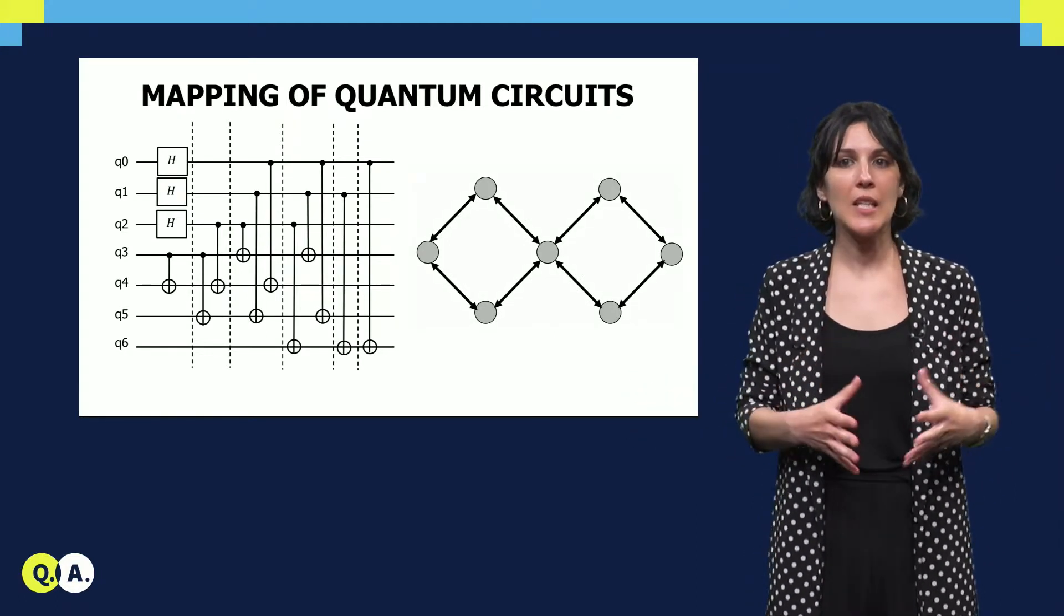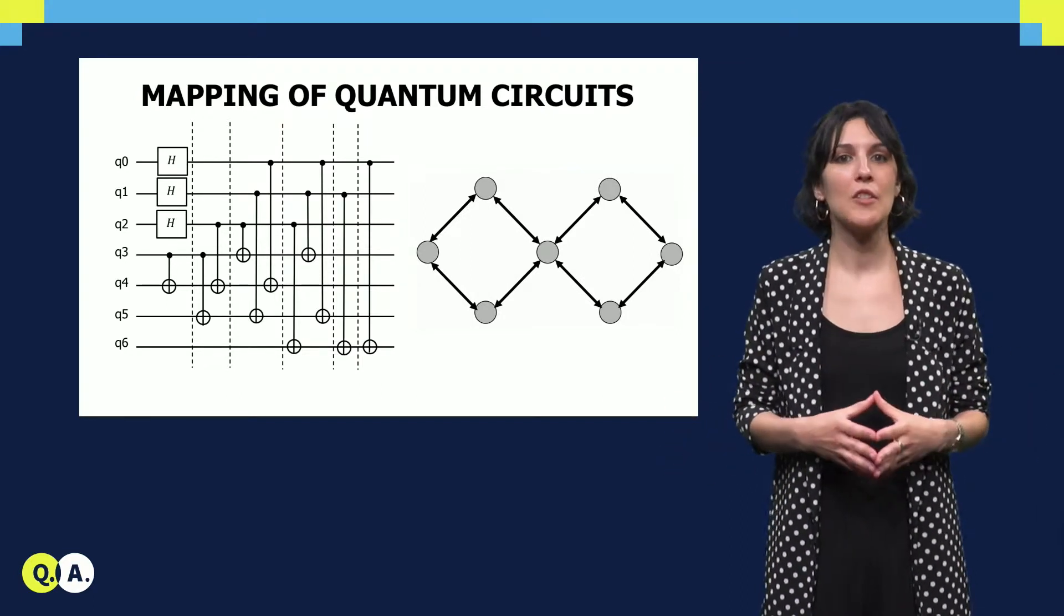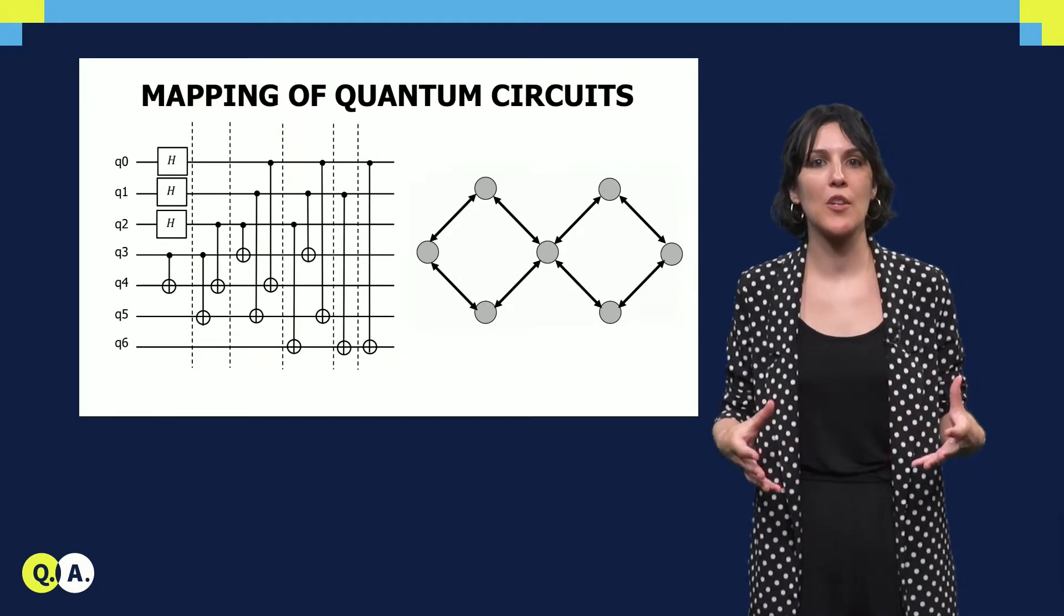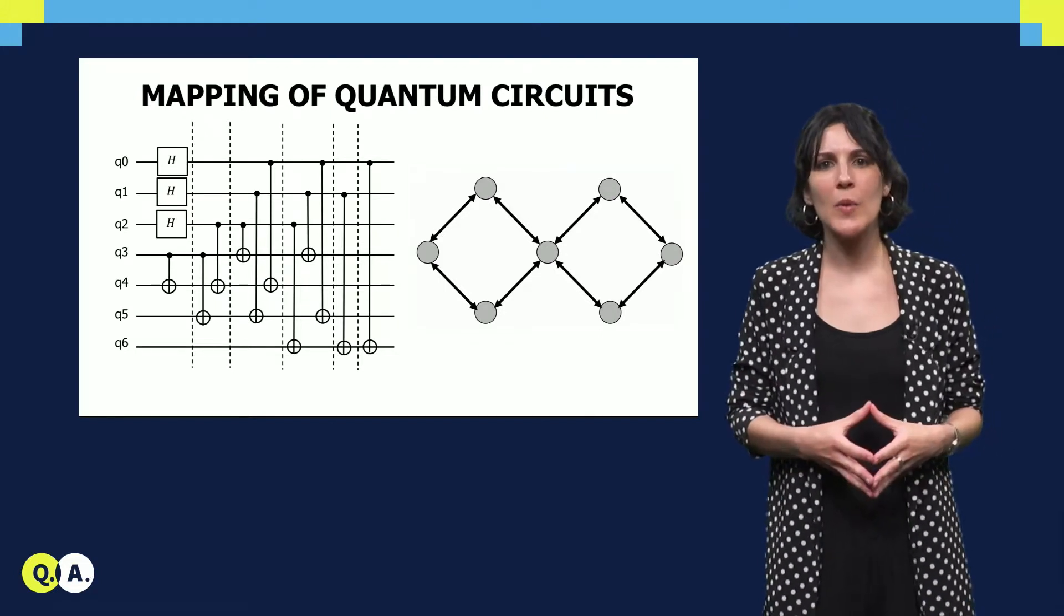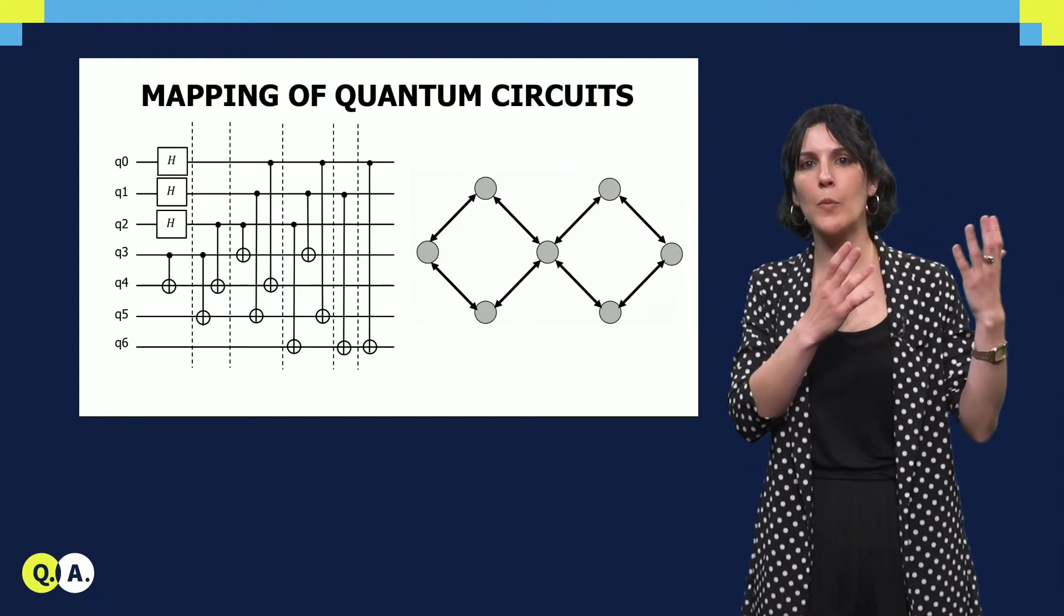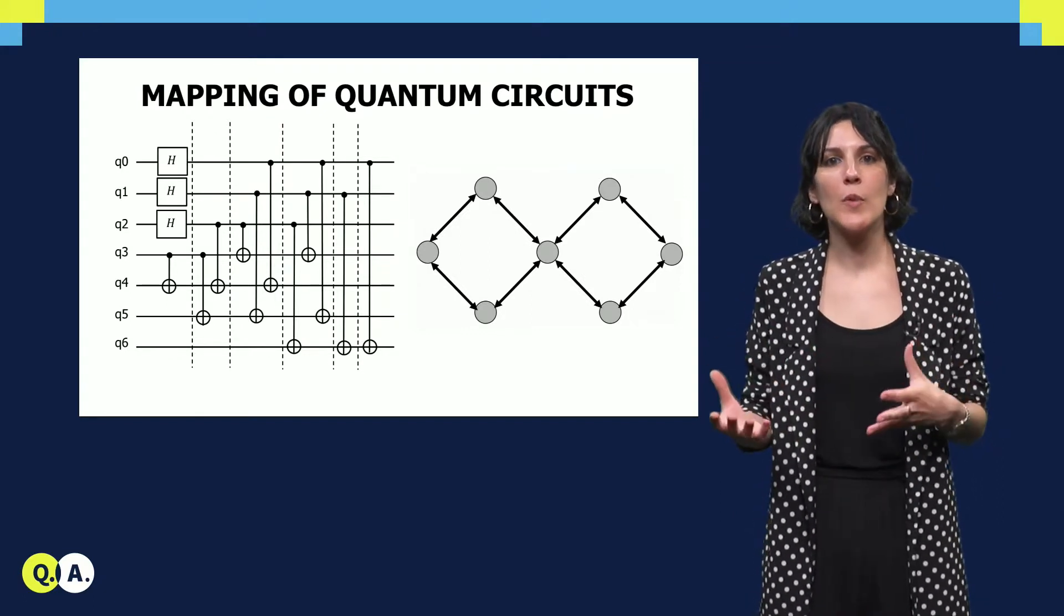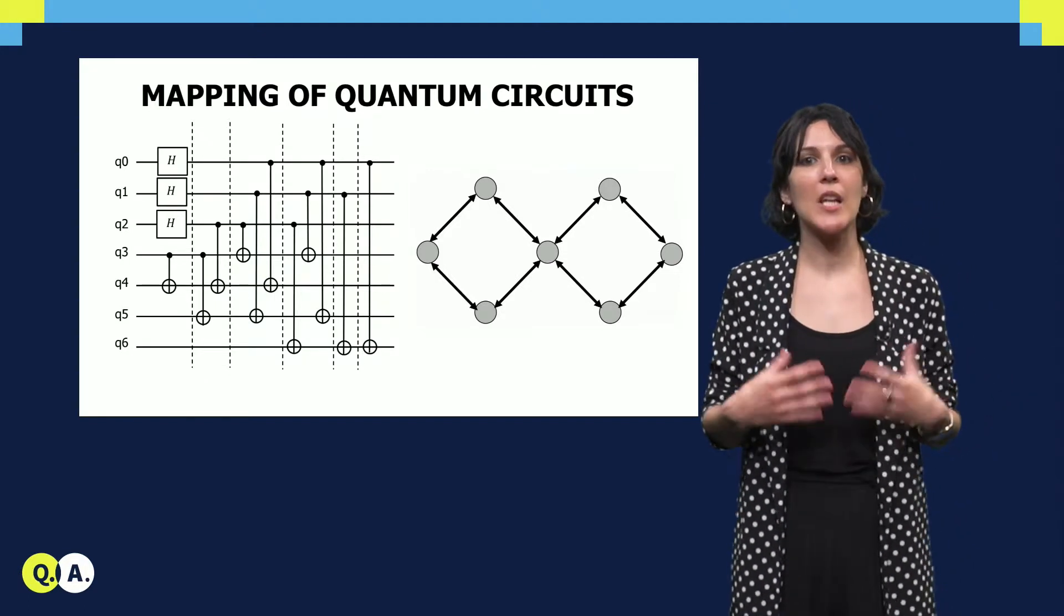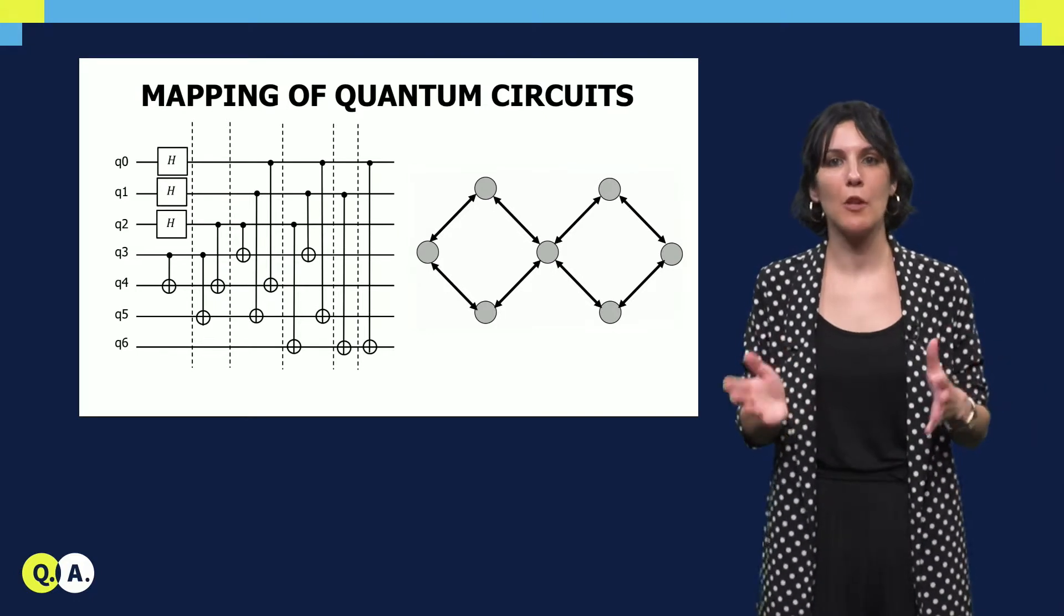Here you can see an example of a simplified layout of a seven-qubit chip. Each circle represents a qubit and each arrow the possible interactions between them. Now the question is, where are the qubits in my circuit that we call virtual qubits placed in our quantum chip? Or in other words, what virtual qubits correspond to what physical qubit? This brings us to the first step of the mapping process, that is, the placement of qubits.